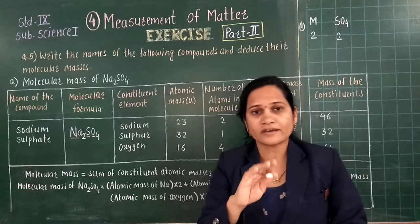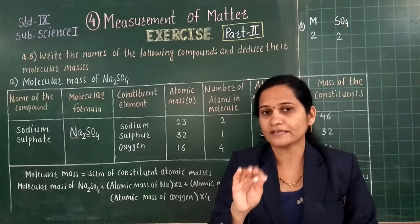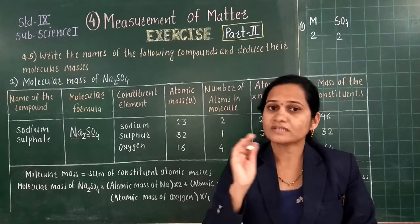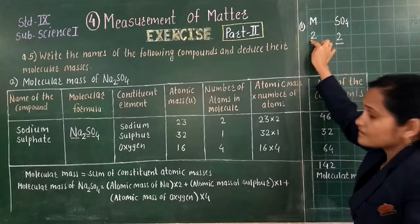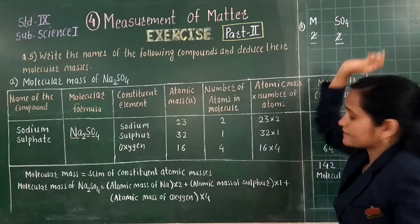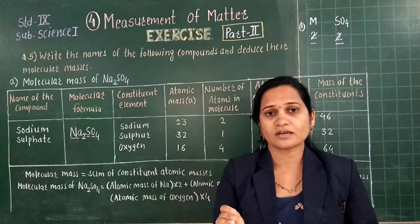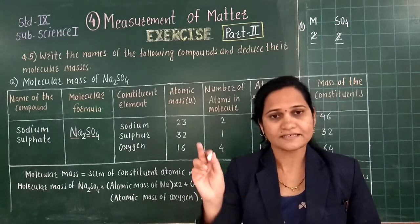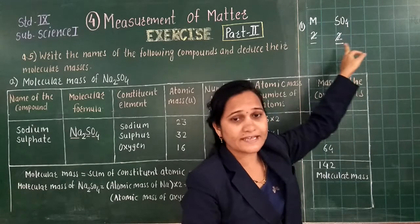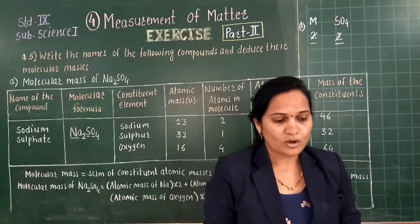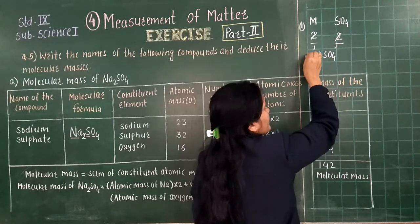In question number 3 we already studied how to write the symbol, how to write the valencies, and how to do the cross multiplication related to the valencies of the compound. In the third step, cross multiplication is done. But when common factors are present as valencies, they cancel each other — dividing valency by the common factor. So by using this method, the chemical formula for the first answer is MSO4.